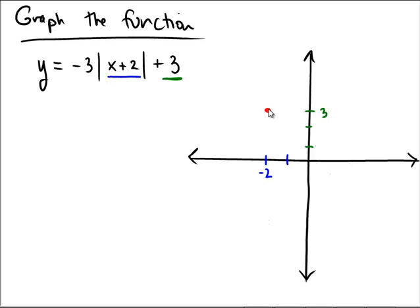Now here's the magic. Since absolute value is really effectively two lines — it's a piecewise function — the coefficient in front indicates the slope of either side of those lines. If we just look at that negative 3 and treat it like a slope, what would that mean?